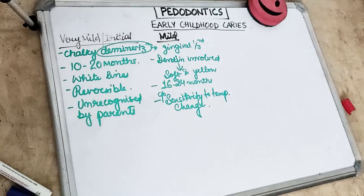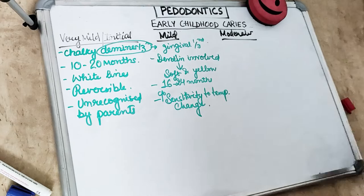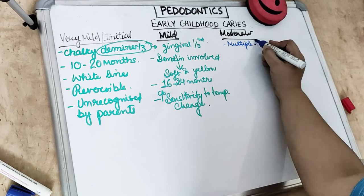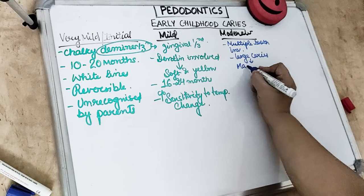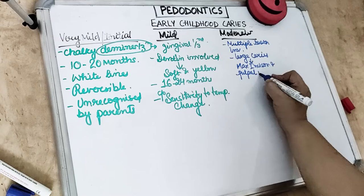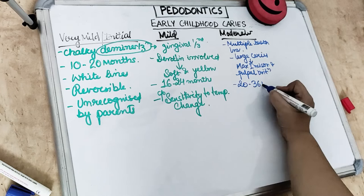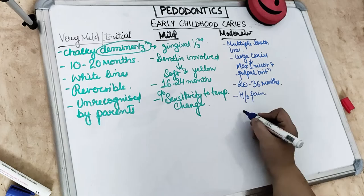Stage 3 — moderate lesions — involve multiple tooth surfaces, with large deep lesions present especially in the maxillary incisor region, causing pulpal irritation. The age group affected is 20 to 36 months, and the child gives a history of spontaneous pain with frequent pulpal involvement.